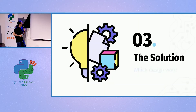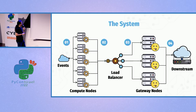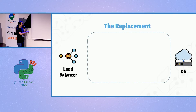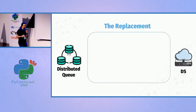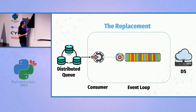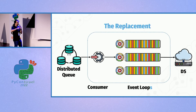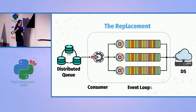Now that we understand that, we can understand the solution. We needed to replace the legacy Java service component. The load balancer went away — it made no sense — and we put a distributed queue in its place. We read from the queue with a consumer, and that consumer fed an event loop that sent data downstream. An event loop is a single-threaded construct, so it doesn't fully utilize all the cores on the machine. So we put multiple event loops in place — every core ran its own event loop. They all read from the same consumer and all sent data downstream.